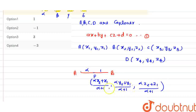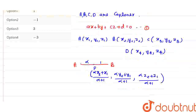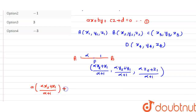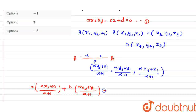Since point P lies on the same plane as A, B, C, D, its coordinates must satisfy the plane equation Ax + By + Cz + D = 0. Substituting: A·(alpha·x2 + x1)/(alpha+1) + B·(alpha·y2 + y1)/(alpha+1) + C·(alpha·z2 + z1)/(alpha+1) = 0.